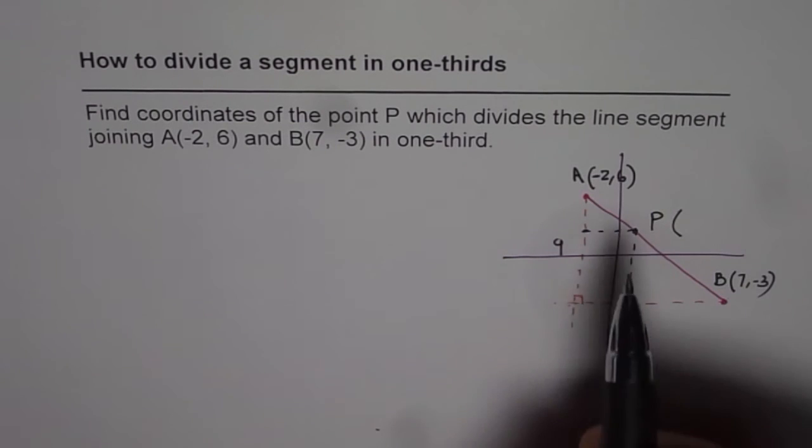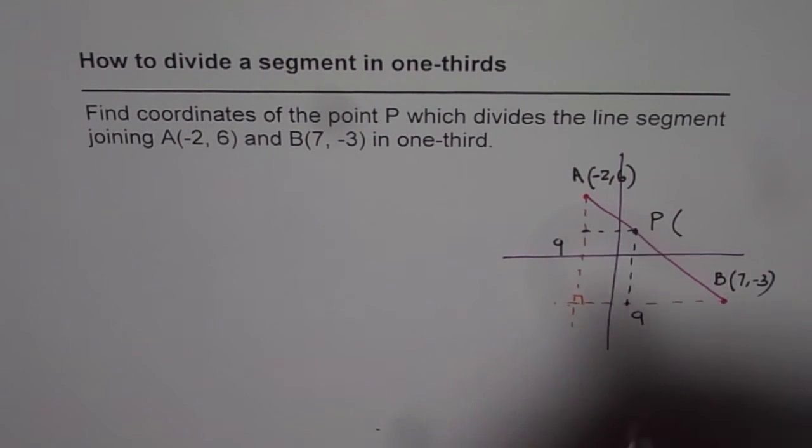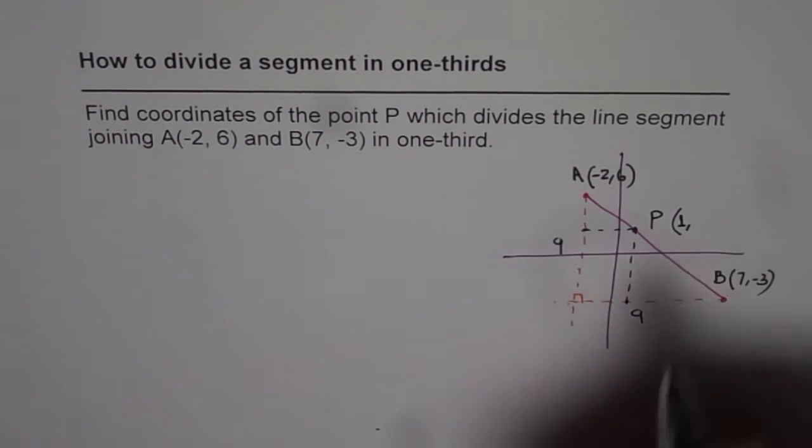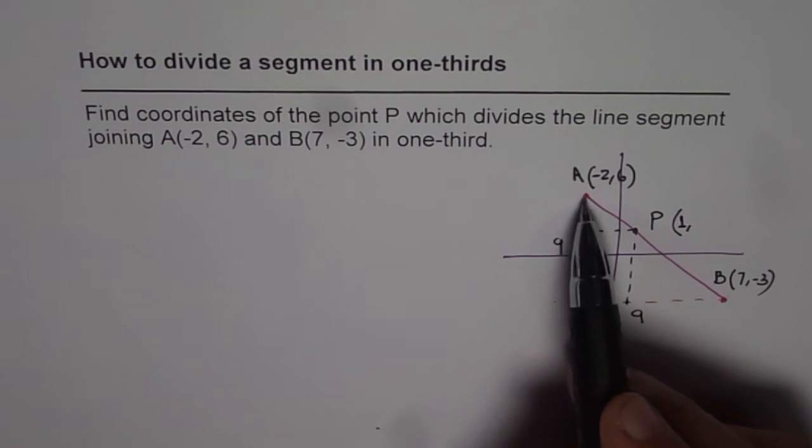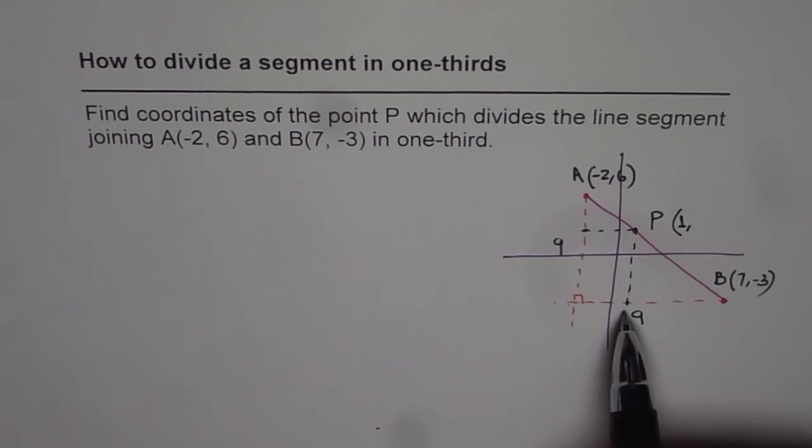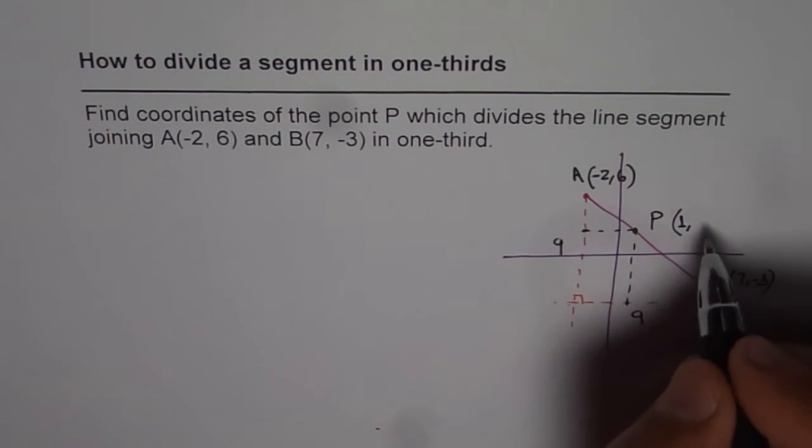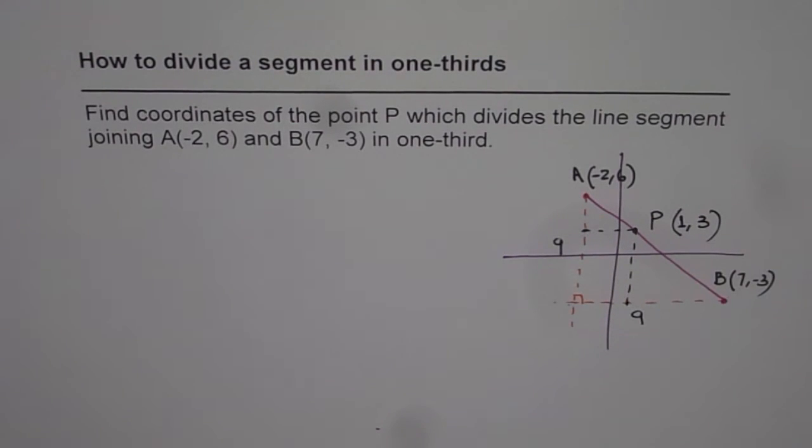So if I am moving three units from here, then -2 plus 3 is indeed 1. So X coordinate is 1. And if I am moving three units down, because vertically also in this case is 9, 9 divided by 3 is 3. Three units down from 6, the point is 3. So we do get the point P as (1, 3).